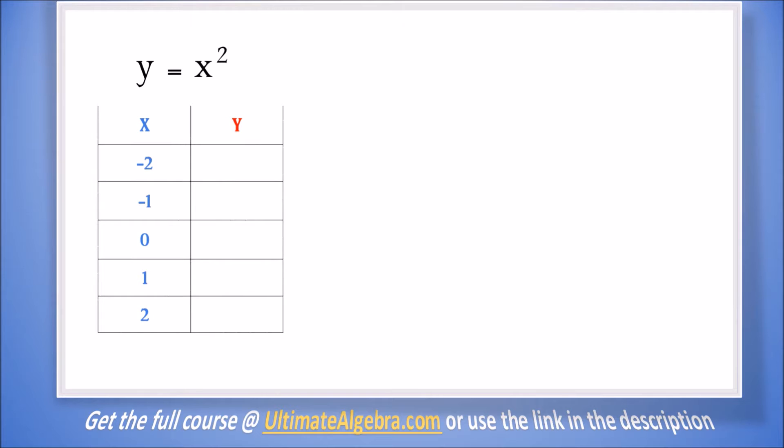We put the x values into the equation and find our y values. When x is -2, we square -2 to get y = 4. When x is -1, we square -1 to get y = 1.